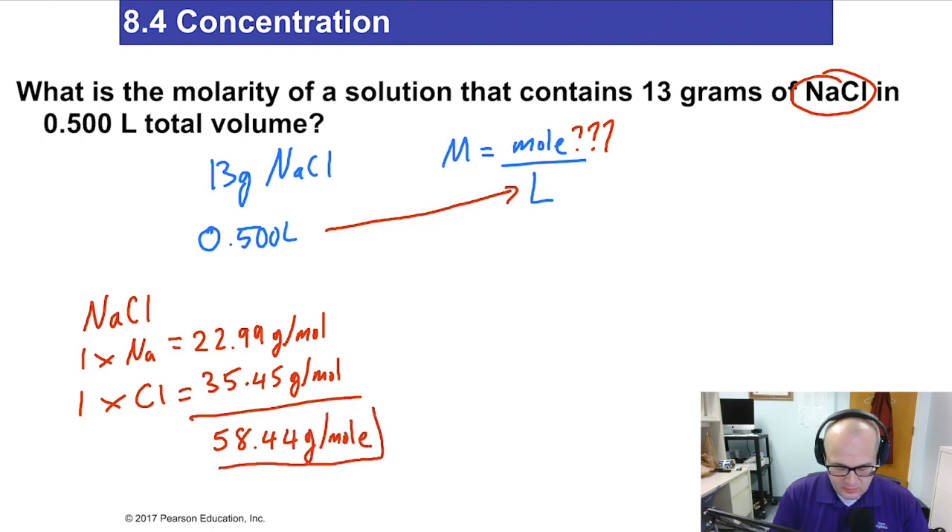All right, now, let me grab my calculator, which is somewhere. This is why you always keep your work area clean, so you'll know where stuff is. 22.99 plus 35.45, there we go. 58.44 grams per mole. That's the molar mass of sodium chloride. I'm going to put a square around it because I need that number. It's very important.